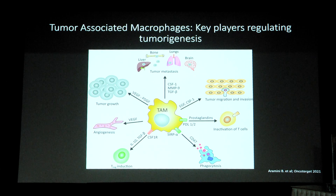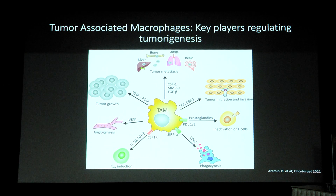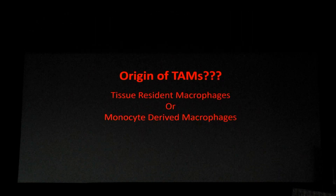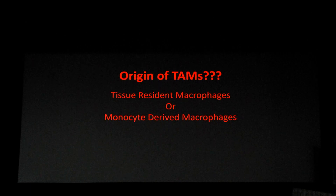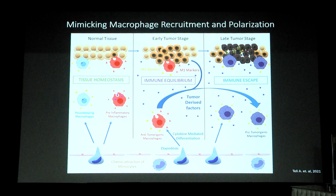Why TAMs? Because TAMs are the most abundant cell population in the tumor microenvironment, and they are known to perform a plethora of pro-tumorigenic functions. If we can get rid of these pro-tumorigenic functions, we are not far from defeating cancer. When I began my work, I wondered where these TAMs come from — are they tumor-resident macrophages like microglia in the brain, Kupffer cells in the liver, or alveolar macrophages? After research, I found that in breast cancer, they come from blood-derived monocytes.